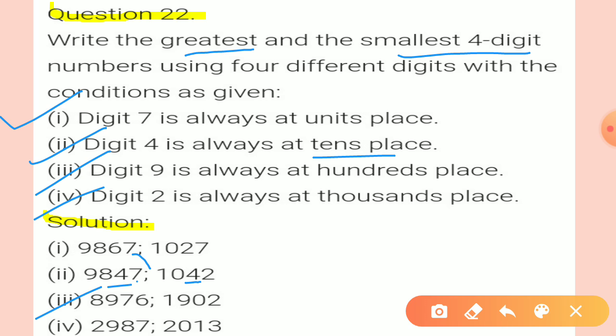Condition 4: digit 2 is always at the 1000th place. Fix 2 in the 1000th place. Greatest number: 2, 9, 8, 7. Smallest number: 2, 0, 1, 3. Exercise 1.2 is completed. Hope you understand this exercise.